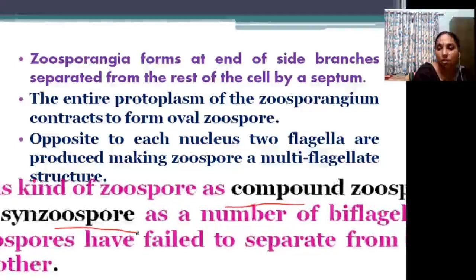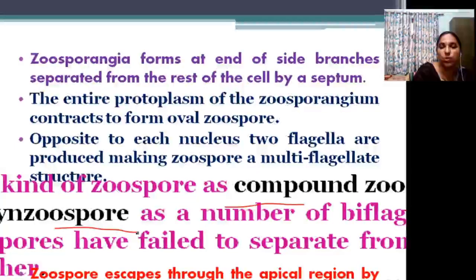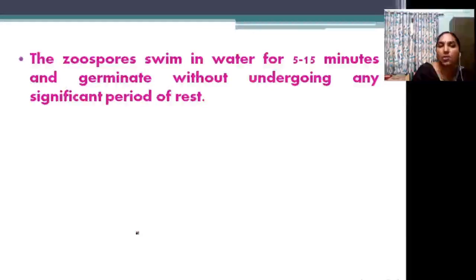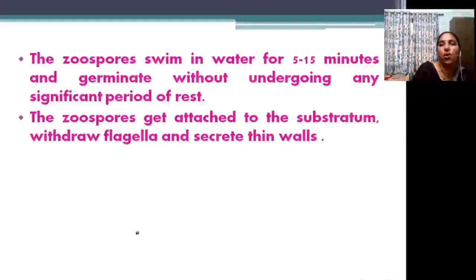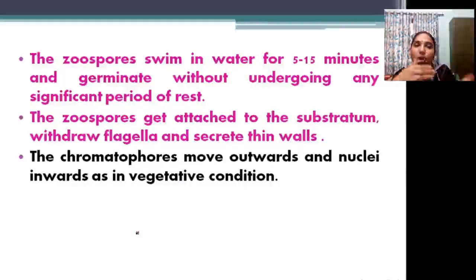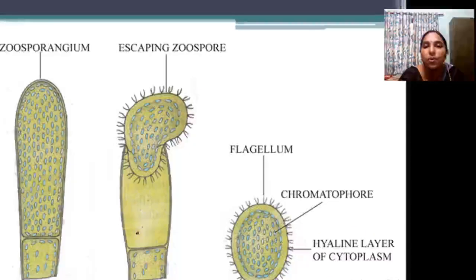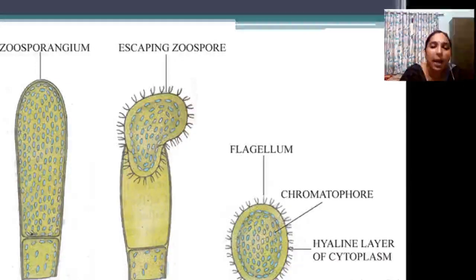The compound zoospore or synzoospore is very important because it is a multiflagellate structure. The zoospores are liberated out, swim in water, undergo a resting period, attach to the substratum, and secrete a wall. Then the reverse process takes place: chromatophores move towards the outside and nuclei move towards the inside. A tube-like structure develops and germinates into a new filament. The tip of the cell becomes the zoosporangium, separated from the remaining cell by a septum.